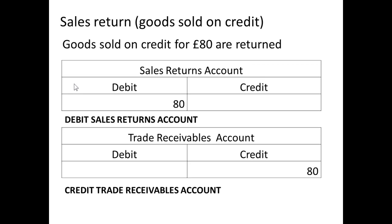Same idea with a sales return: if we have goods sold on credit and the customer returns them for a good reason, we will debit the sales returns account and we will credit the trade receivables account. Crediting the trade receivables means, of course, that we are owed a little less.